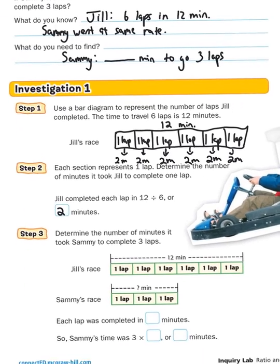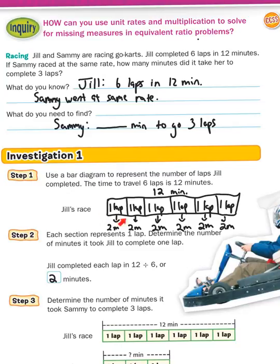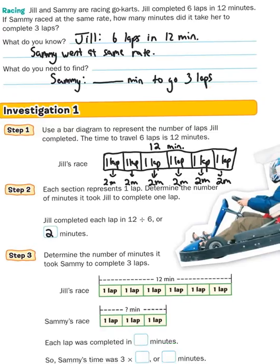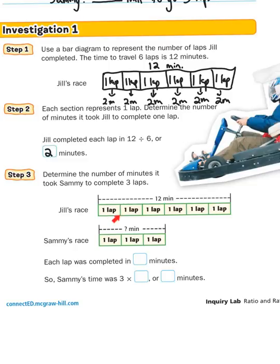Now let's go down to step three. Remember, this bar diagram is only Jill. Sammy went at the same speed, and it took her how many minutes to go three laps? In step three: if Jill did 12 minutes for six laps, and Sammy did three laps at the same speed, each lap was completed in two minutes. So Sammy's time was three times two, or six minutes. If I use my bar diagram, each lap was two minutes — two minutes, two minutes, two minutes — add those up and you get six minutes.